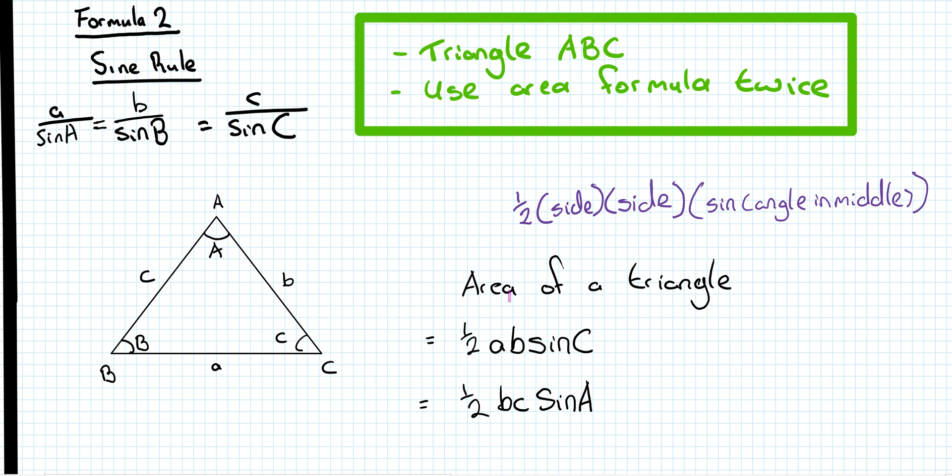So the area of a triangle formula is a half AB sine C. Some of you'll know that it's a half of a side by a side by the sine of the angle in the middle. So it's AB by the sine of the angle in the middle, or it would be a half BC by the sine of the angle in the middle, or you could also do CA and it would be sine B.